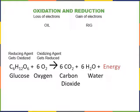The example shown here is the oxidation of glucose. Glucose is the reducing agent that gets oxidized, and oxygen is the oxidizing agent that gets reduced. In this process, glucose and oxygen are converted into the lower energy molecules carbon dioxide and water.